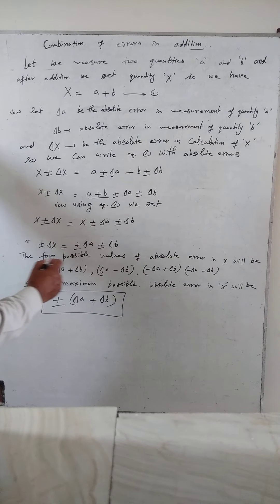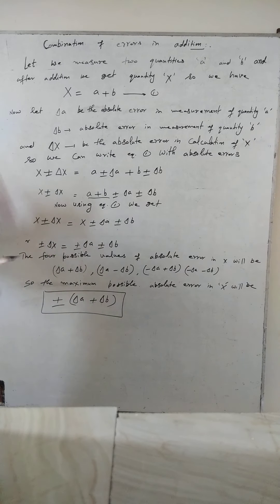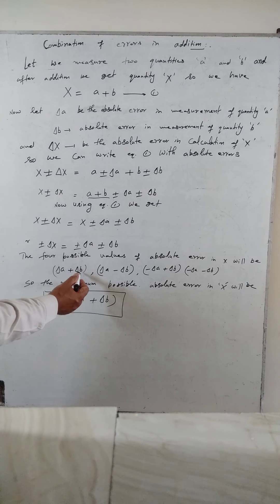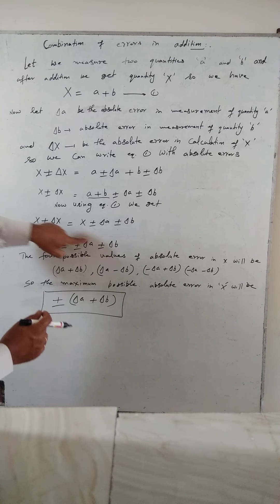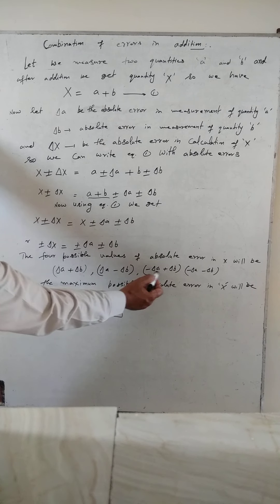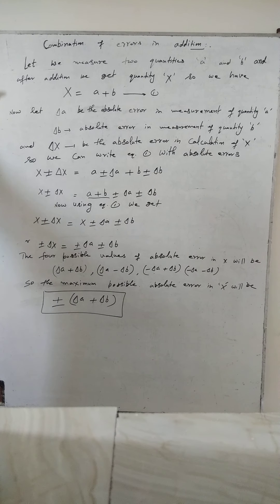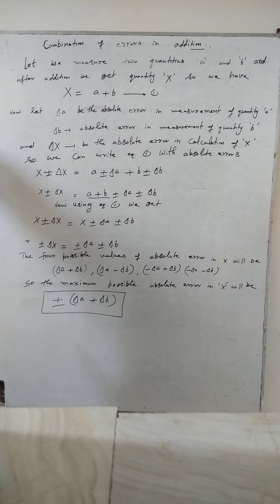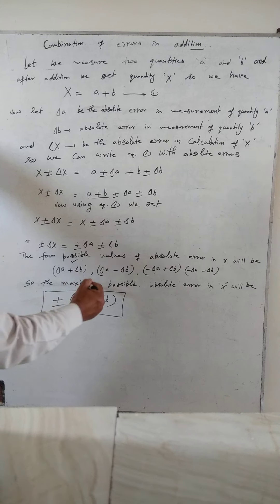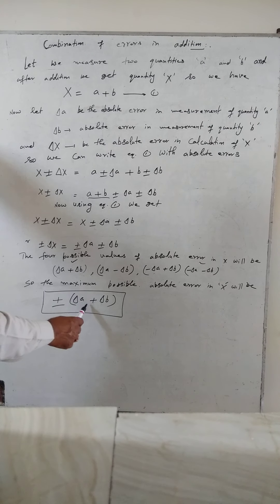इस expression से 4 possible values बन जाएंगी delta X की: plus delta A plus delta B; plus delta A minus delta B; minus delta A plus delta B; minus delta A minus delta B. इन 4 possible values में से जो सबसे ज़्यादा error होगा — maximum possible absolute error in X — वो कब होगा? जब दोनों को plus किया या दोनों को minus किया, तो absolute error = plus-minus delta A plus delta B.